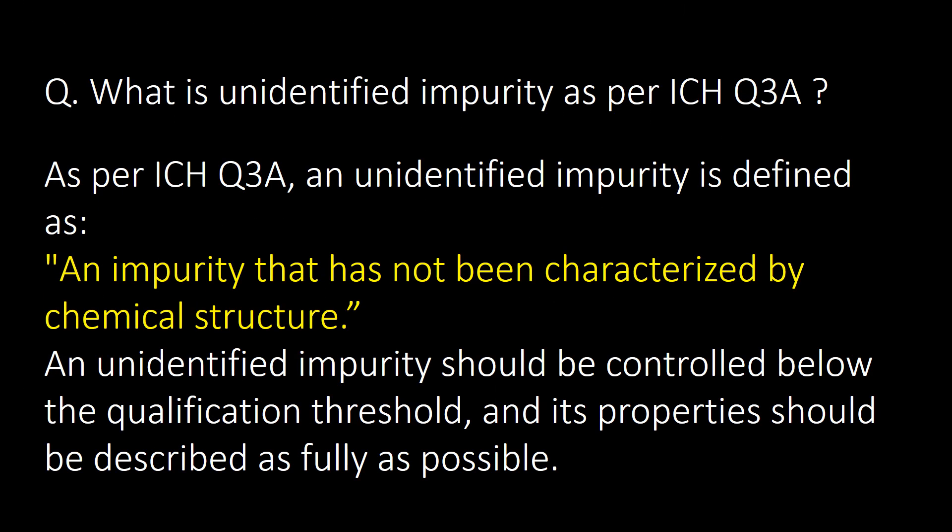What is an unidentified impurity as per ICH Q3A? As per ICH Q3A, an unidentified impurity is defined as an impurity that has not been characterized by chemical structure. An unidentified impurity should be controlled below the qualification threshold and its properties should be described as fully as possible.